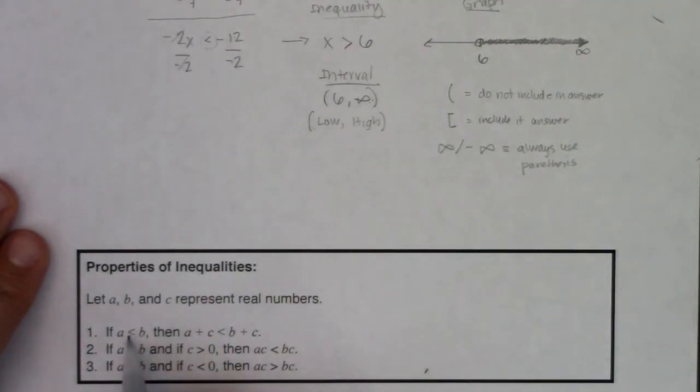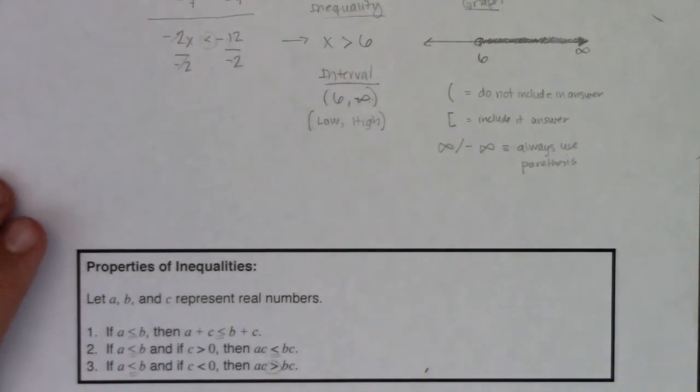So I want you to see, right? It started less than, kept the less than, less than, kept the less than, less than, went to greater than because we had a negative number. So anytime you multiply or divide an inequality by a negative number, you have to remember to change the direction of the inequality.